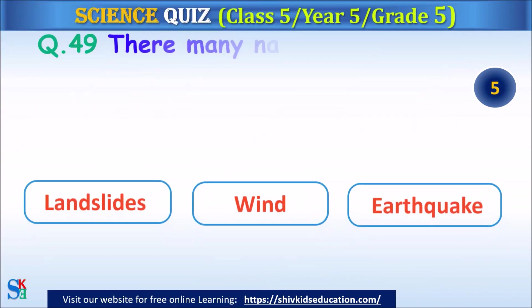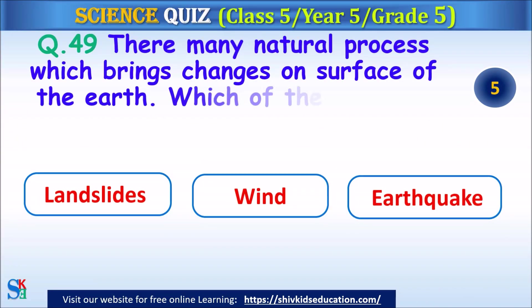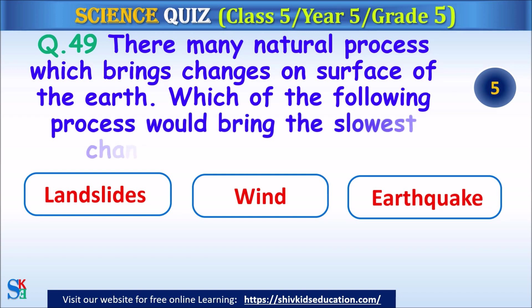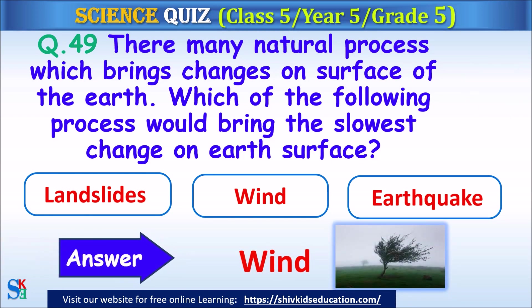Question 49: There are many natural processes which bring changes on the surface of the earth. Which of the following processes would bring the slowest change on earth's surface? Landslides, wind or earthquake? The answer is wind.